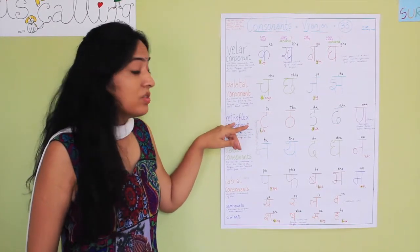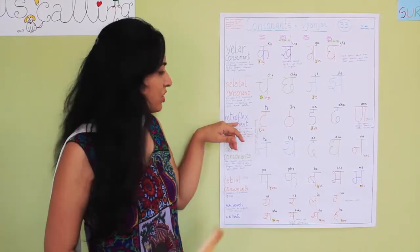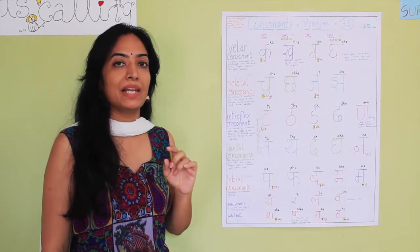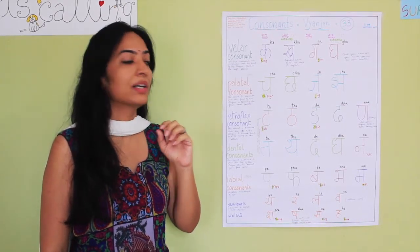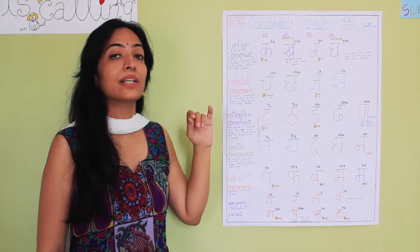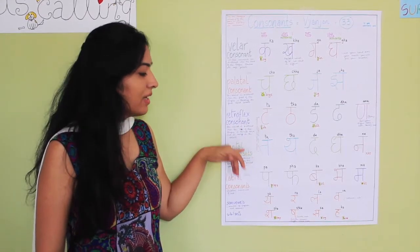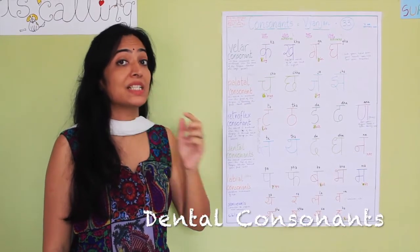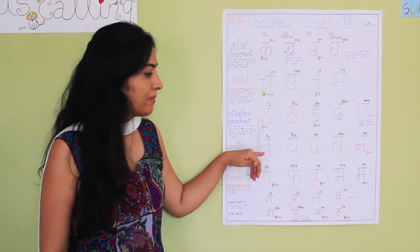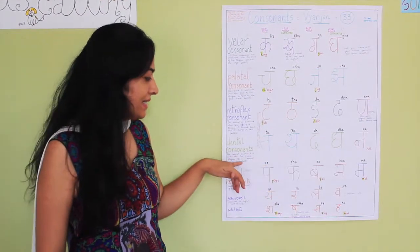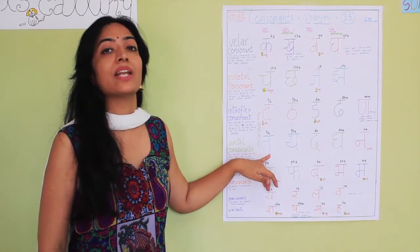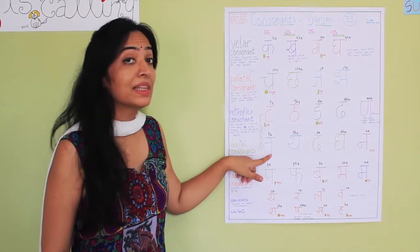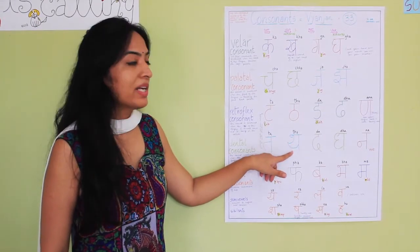So just one more time we'll rush this. Retroflex consonants are when your tongue bangs on your palate like a drum. Now the next one is the dental consonants when your tongue is behind your front teeth like th. So let me say for you the dental consonants and these sounds are not there in English. So this one is th. This one is th.